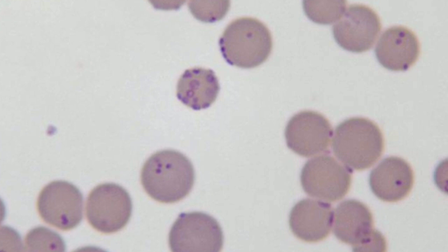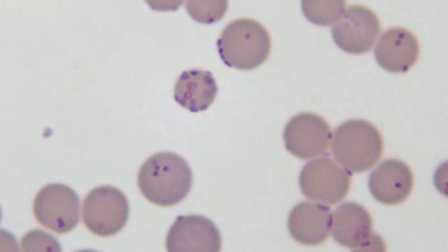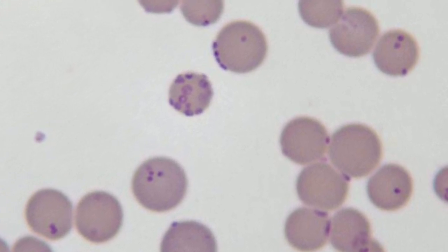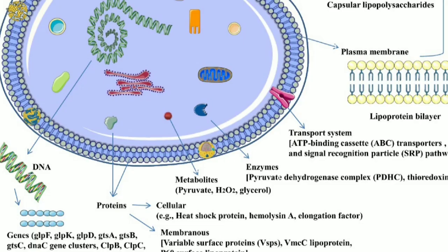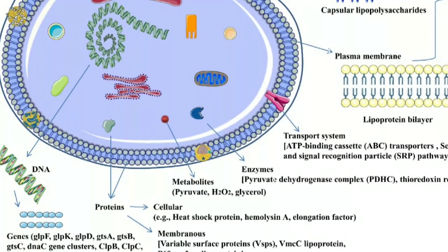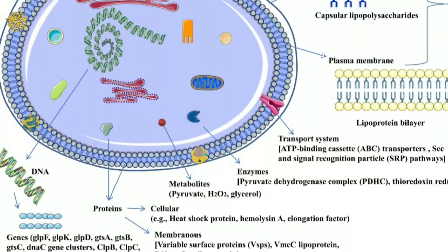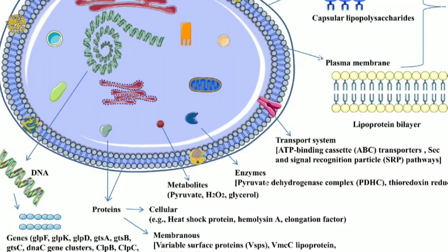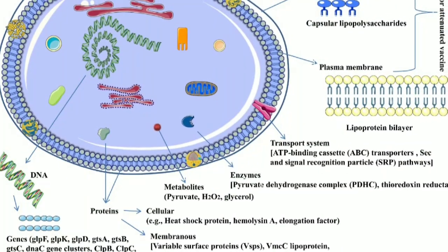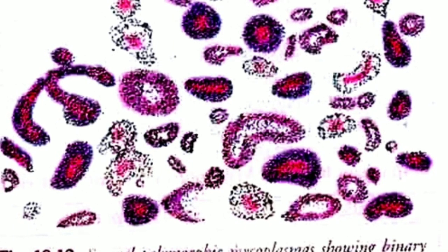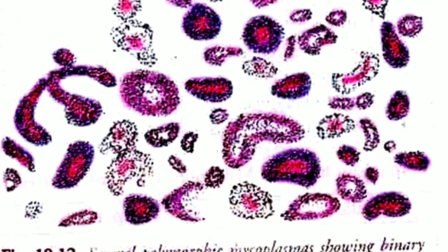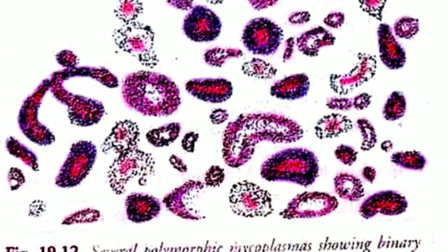These are the two methods of reproduction found in mycoplasmas. Now we are going to study the economic importance of mycoplasmas. First, mycoplasmas cause diseases to plants, animals, and humans. Second, some mycoplasma species are commensal organisms.